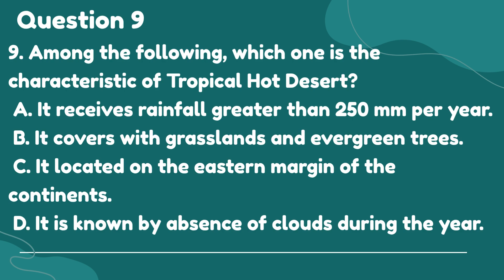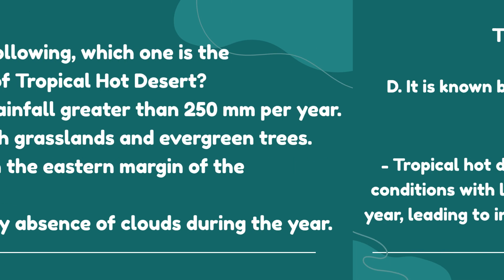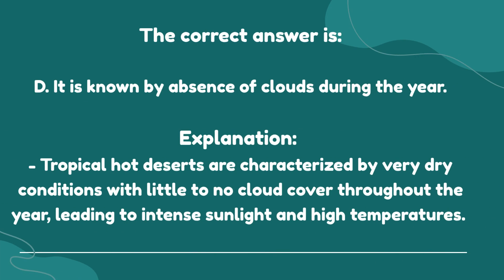The correct answer is D. It is known by the absence of clouds during the year. Explanation: Tropical hot deserts are characterized by very dry conditions with little to no cloud cover throughout the year, leading to intense sunlight and high temperatures.